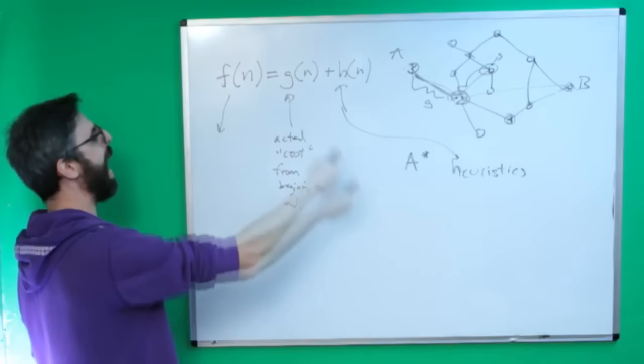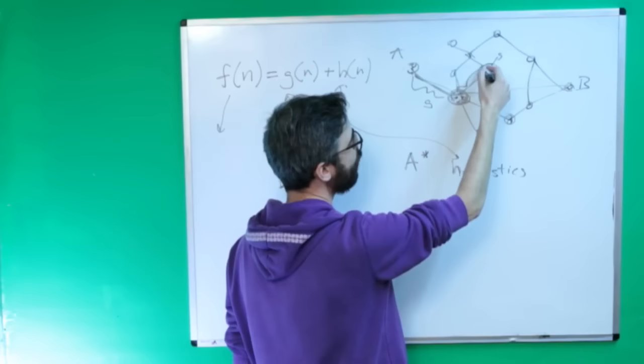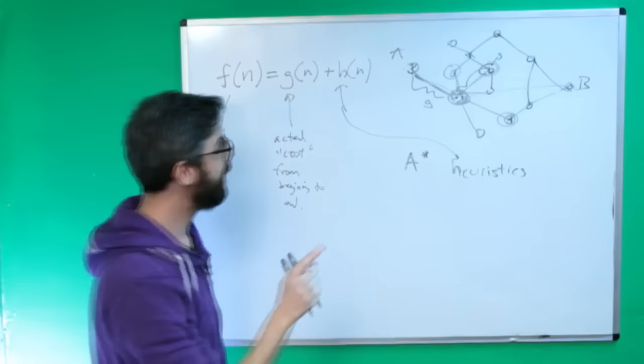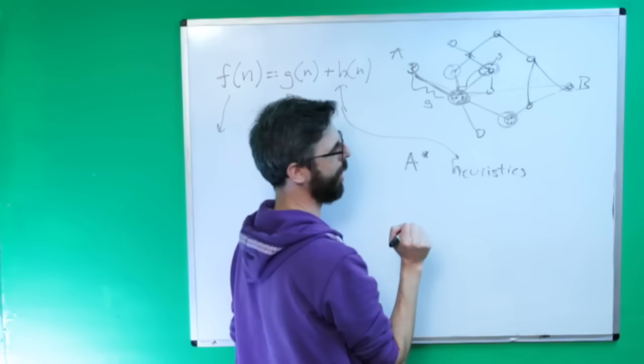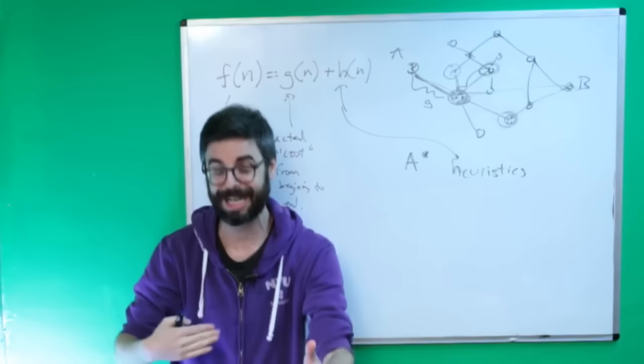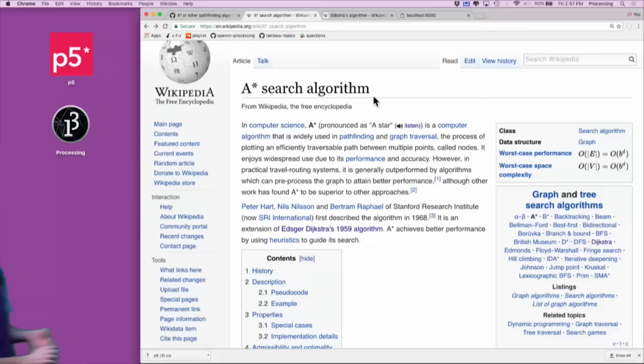For every single node I want to figure out how long it took me to get there, then guess how long it's going to take to the end. If I'm here, I look at all possibilities — I could go here, here, or here. I pick the total cost: how long it took to get there plus my guess of how much more I have to go. It might still have to back up and check some other ones later, but that will work.